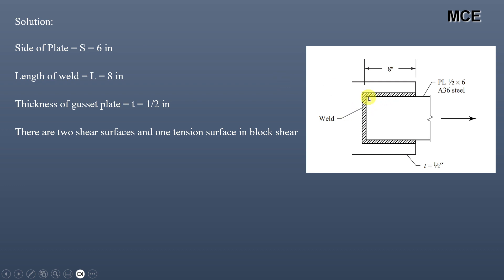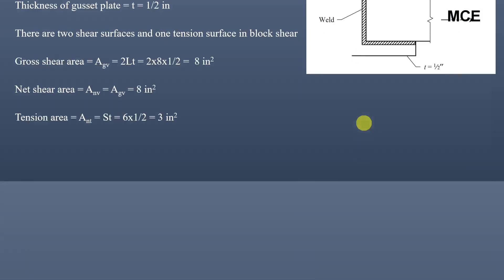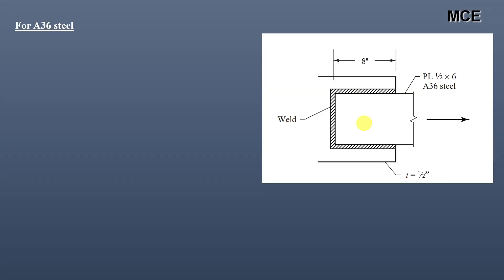There are again two shear surfaces and one tension surface. Shear surfaces are parallel to the force and the tension surface is normal to the force. Gross shear area = 2 × 8 × 1/2 = 8 in². Net shear area equals the gross shear area = 8 in². Tension area = side of plate × thickness of gusset plate = 6 × 1/2 = 3 in². For A36 steel, Fy = 36 ksi and Fu = 58 ksi.